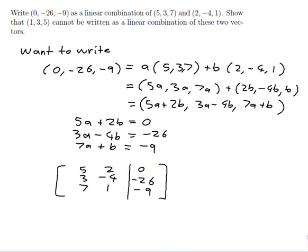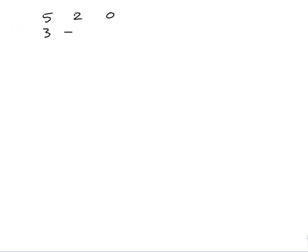I'll go back to row reducing. I'll need a new page for that. So the matrix is: row 1: [5, 2, 0], row 2: [3, -4, -26], row 3: [7, 1, -9].